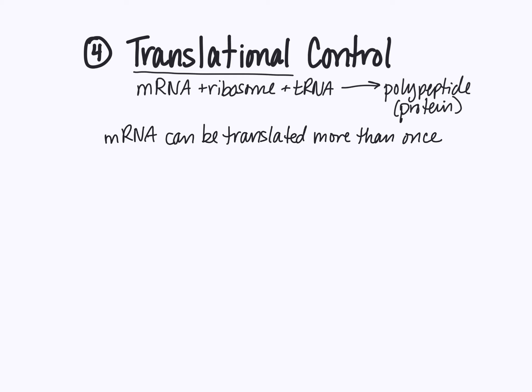So even if transcription only happens once a day for a particular gene, that doesn't mean only one protein is going to be made — we can actually have multiple ribosomes translate that mRNA into making that polypeptide. Some post-transcriptional processing we discussed in protein synthesis included the addition of a poly-A tail and a 5' cap, which are nucleotides added to the 3' and 5' ends of the mRNA molecule.